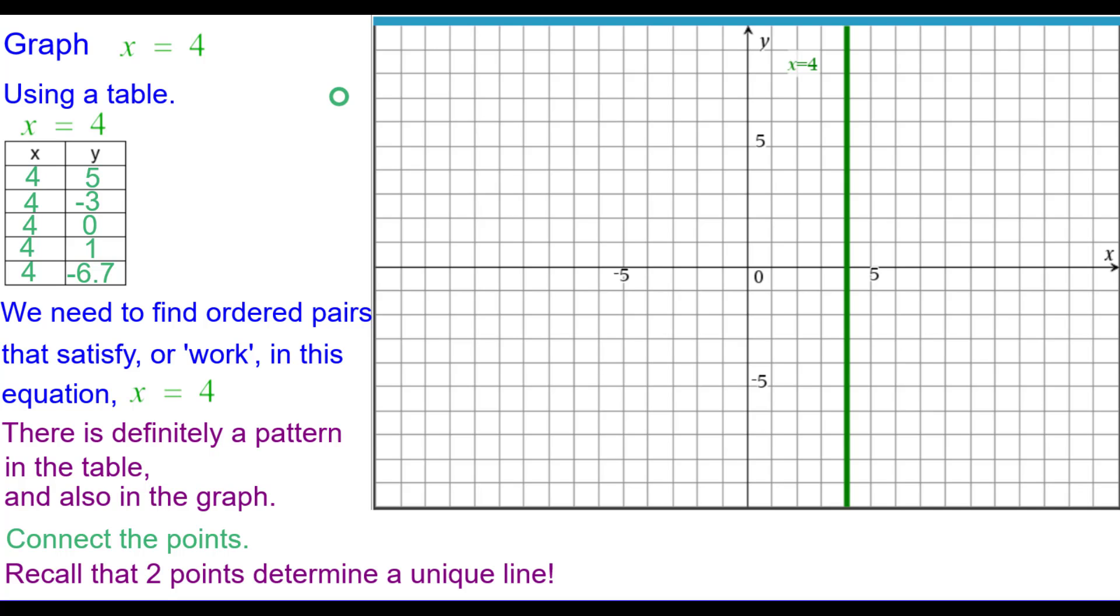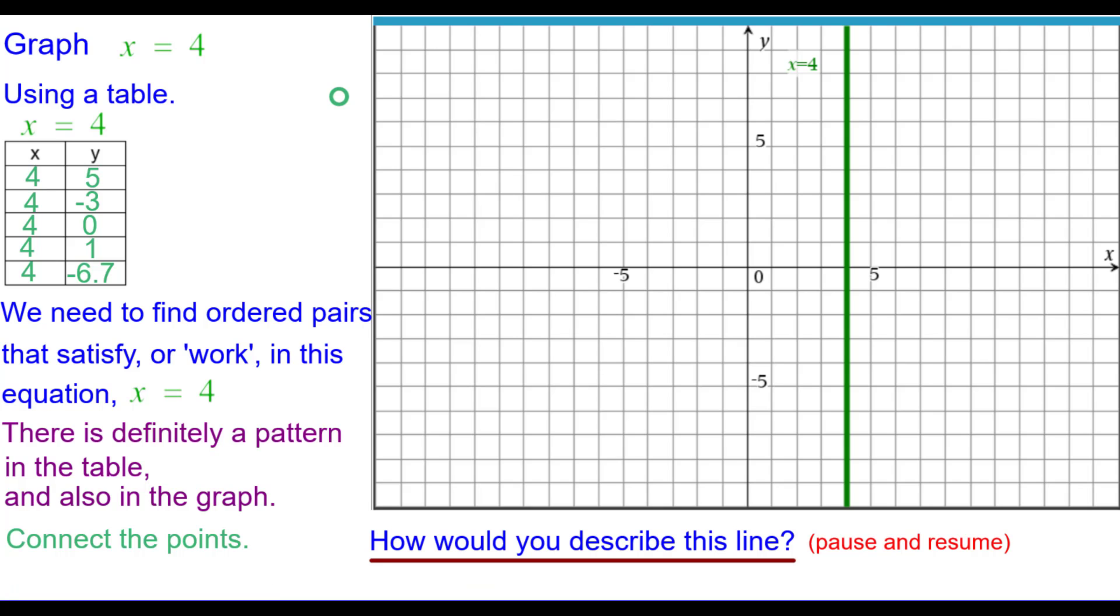Recall that two points determine a unique line. How would you describe this line? Please press pause and resume when you're ready. We could say it's a vertical line. It is a line with no slope. Or we can say that the slope of this line is undefined. And this is not a function.